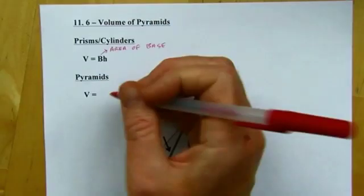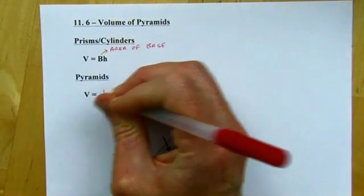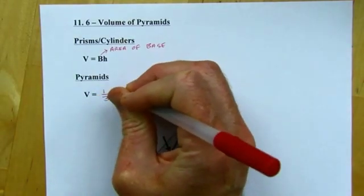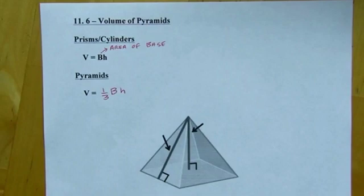For pyramids, it's going to be one-third of the area of the base times the height. I had some good demonstrations to show why it'd be one-third, but it's a little hard to do on this video, but you can find them on YouTube really easily if you're interested.